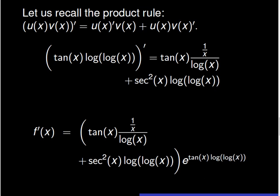As a result, f prime of x is equal to the quantity tangent of x times the fraction 1 over x over logarithm of x, plus secant squared of x times logarithm of logarithm of x, times the exponential of tangent of x times the logarithm of logarithm of x.